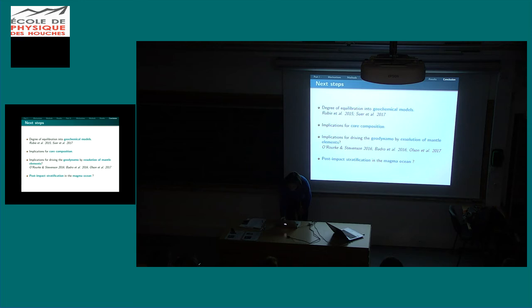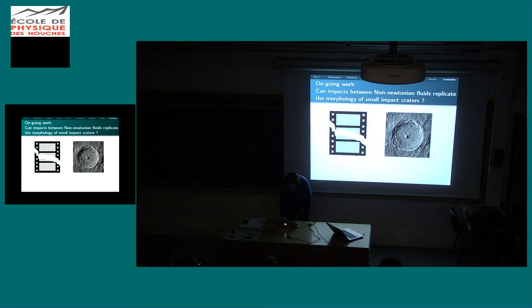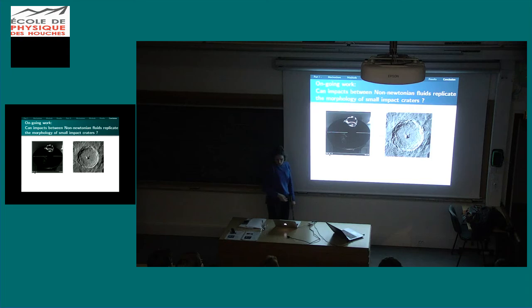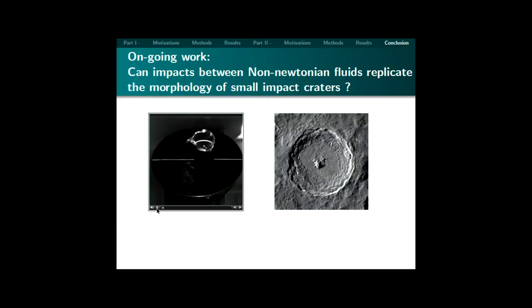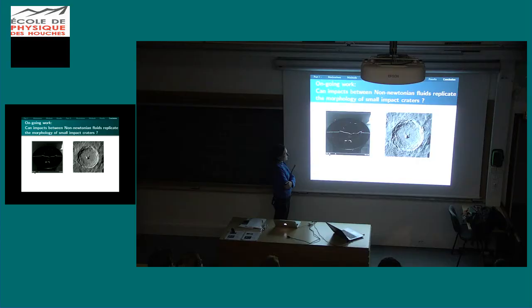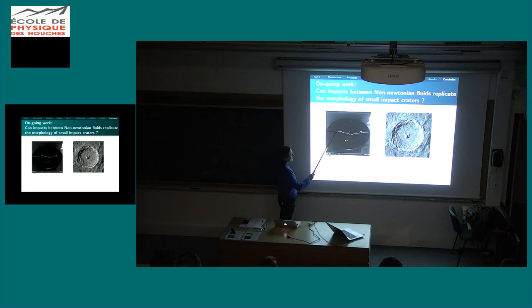So that's it for this talk. The conclusions are: first, lab experiments are very useful to study impacts because they are complementary to simulations — they can produce turbulence. Second, the Froude number, which is a ratio between inertia and gravity, is the main key control parameter. We found that the degree of chemical equilibration due to the impact velocity is three to five times larger than previous models predicted. The stratified layer observed at the top of Earth's core today could be a vestige of the impact that formed the moon 4.5 billion years ago. One study we are working on right now with colleagues in Cambridge is to do the same game but to explain crater morphology at the surface of planets using non-Newtonian fluids — impact in a yield stress fluid, where you keep a crater at the end because it's solid below a given stress and behaves as a fluid above it.